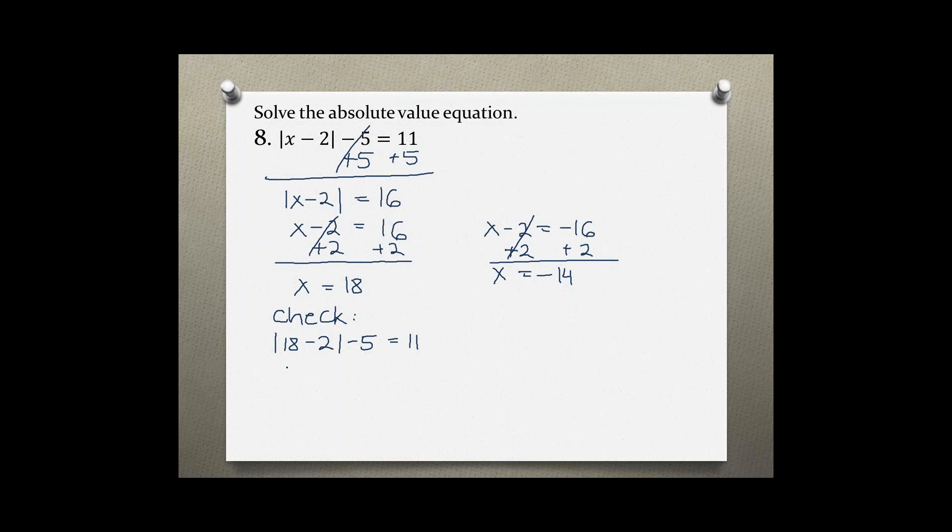So 18 minus 2 is 16, and the absolute value of 16 is 16. 16 minus 5 equals 11, so 11 equals 11 which is a true statement. On this side let's see now if plugging in negative 14 for x into the original equation gives us a true statement.